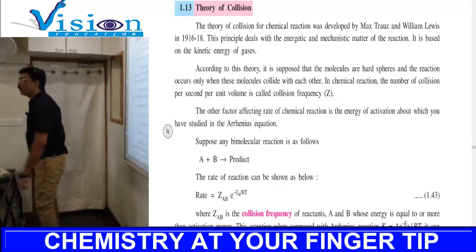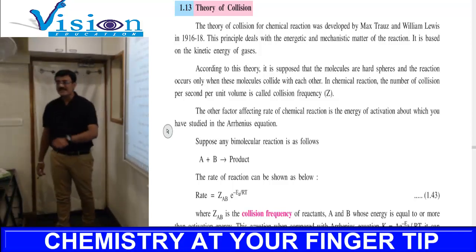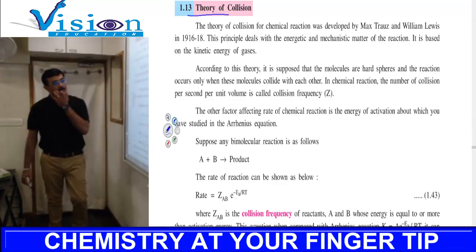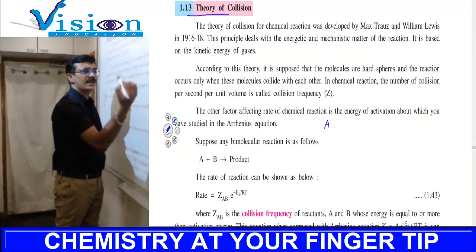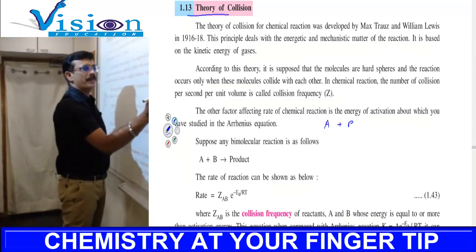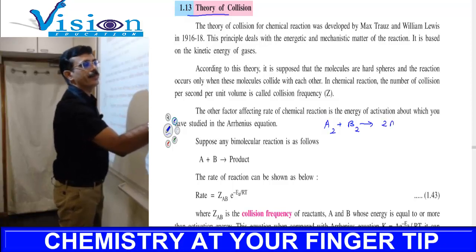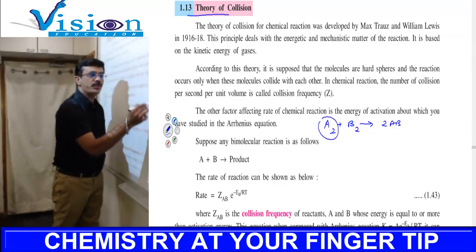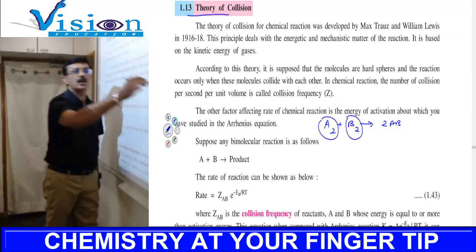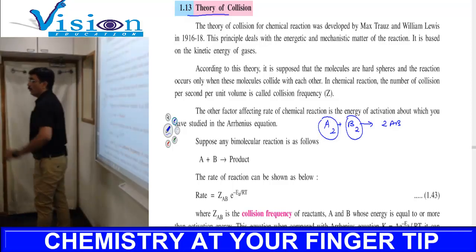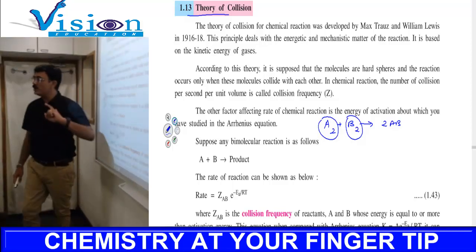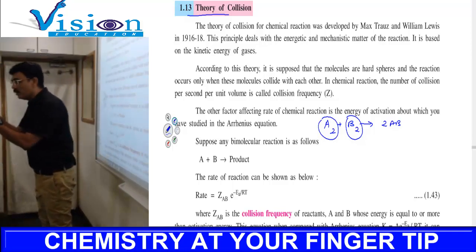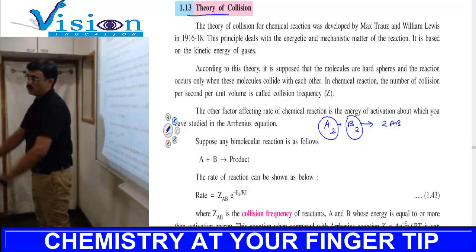Welcome back. We have one more important theory from your textbook: the theory of collision. This explains the rate of chemical reactions. Let's say we have a reaction, A + B or A2 + B2 giving AB. For any chemical reaction, there has to be a collision. If there is no collision between the reactant molecules, no product is obtained.